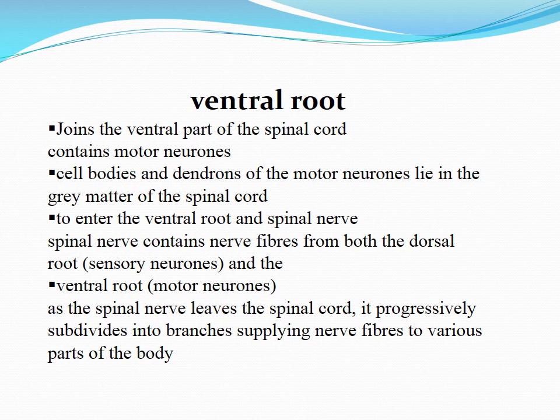Remember: the dorsal root contains sensory neurons and the ventral root contains motor neurons. Cell bodies and dendrons of motor neurons lie in the gray matter of the spinal cord and enter the ventral root. The spinal nerve contains nerve fibers from both the dorsal and ventral roots. As the spinal nerve leaves the spinal cord, it progressively subdivides into branches, supplying nerve fibers to various parts of the body.